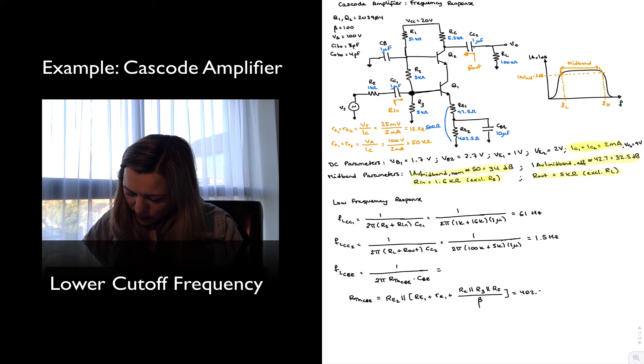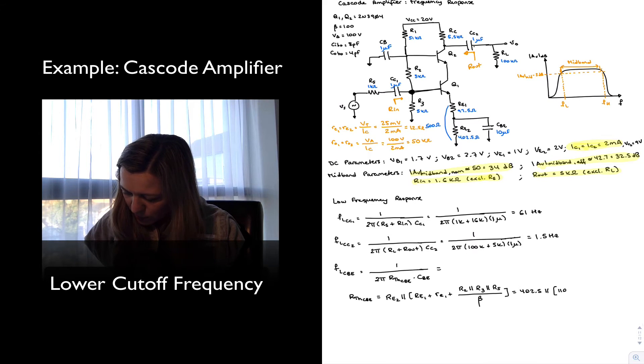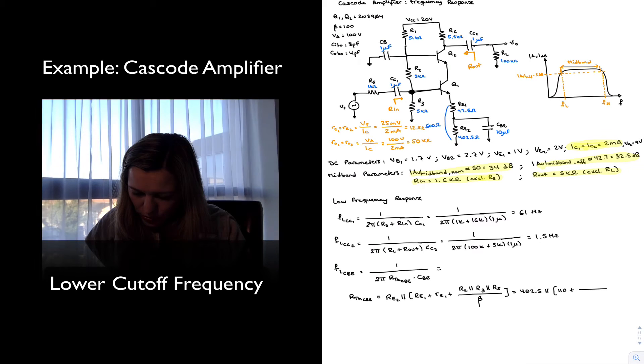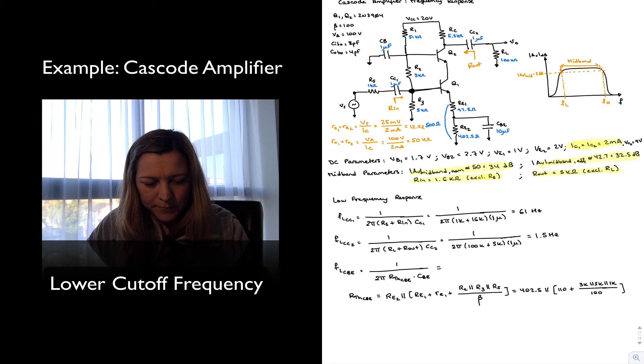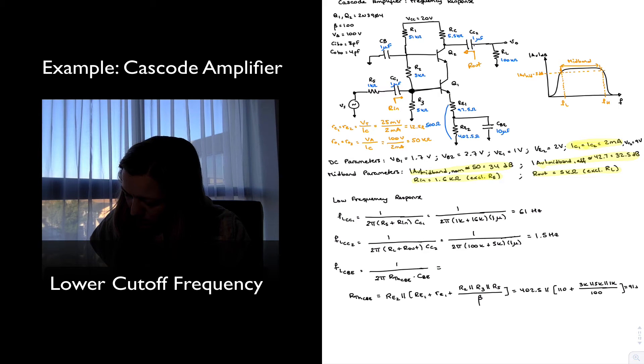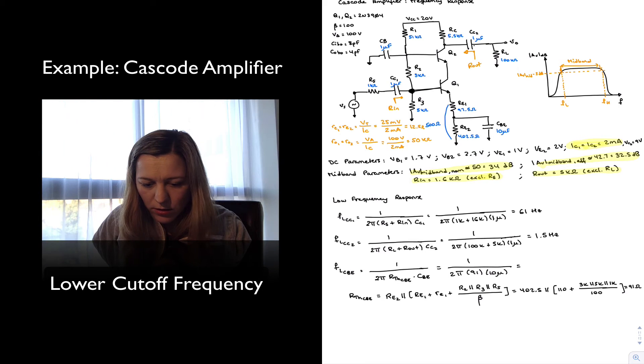So it would be 402.5 in parallel with RE1 plus little re1, we've already calculated that to be 110. So to save space I'm already going to write that there. And then this would be R2, 3k in parallel with 5k in parallel with 1k, divided by 100. And I've calculated that overall resistance to be around 91 ohms, the parallel combination. So I'll write it here, 91 ohms. Now I can enter that here, 1 over 2π, 91 times 10 micro. This is 162.4 hertz.